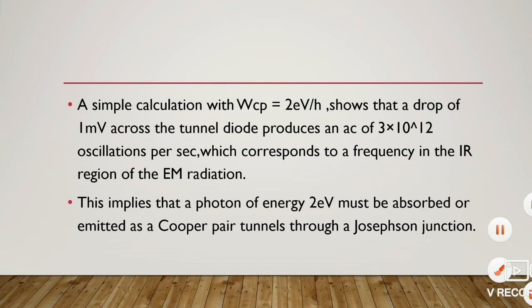A simple calculation with ωcp = 2eV/ℏ shows that a drop of 1 mV across the tunnel diode produces an alternating current of 3×10¹² oscillations per second, corresponding to a frequency in the IR region of electromagnetic radiation. This implies that a photon of energy 2eV must be absorbed or emitted as a Cooper pair tunnels through a Josephson junction.